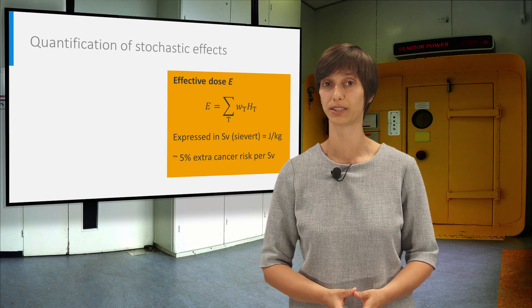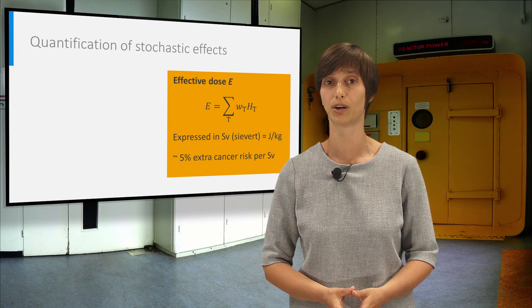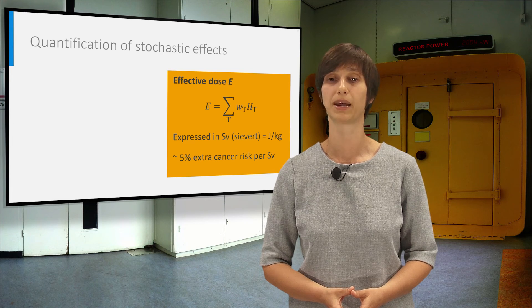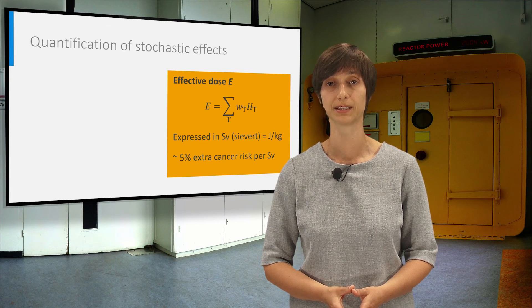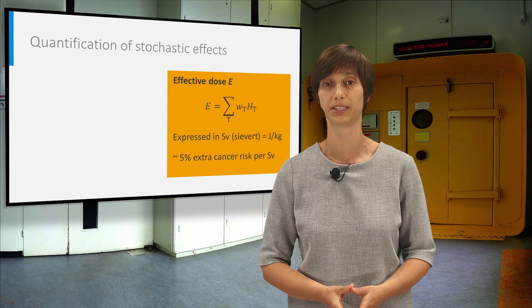Epidemiological studies have shown that there is about 5% additional cancer risk per Sievert of effective dose. So multiplying the effective dose with 5% gives you an indication of the additional cancer risk induced by the radiation exposure.